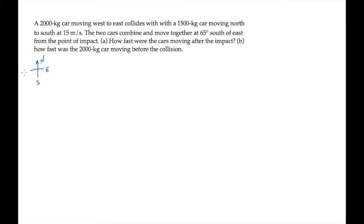There are two cars in this problem. The first, we'll call car A, is moving west to east in the positive x direction at an unknown speed v_a. The second car, B, is moving north to south at a speed of 15 meters per second.